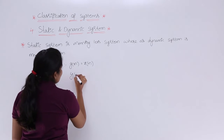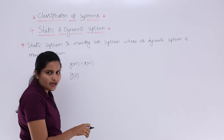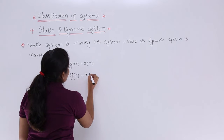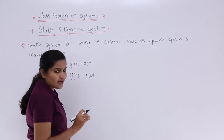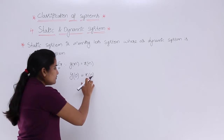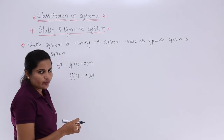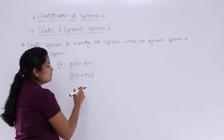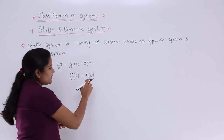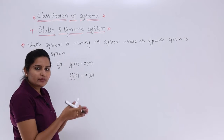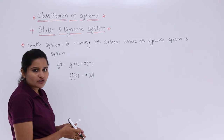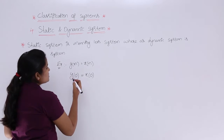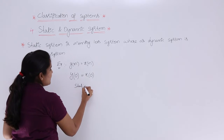For example, consider the system y(n) = x(n). Substituting n = 0: y(0) = x(0). The response at time 0 equals the input at time 0, which is the present input. Since it depends only on the present input and not on past or future values, this is a static system.